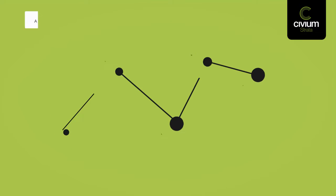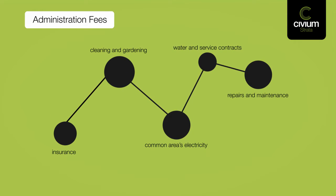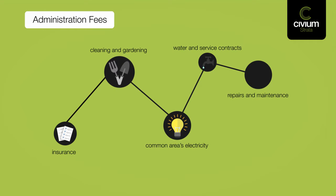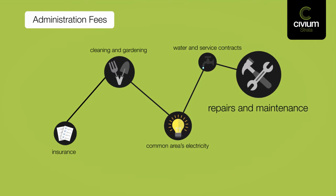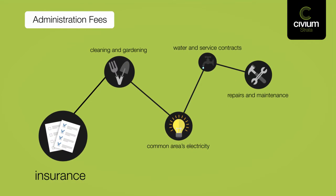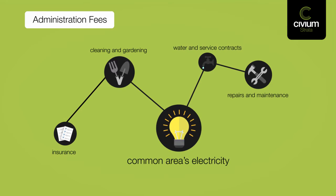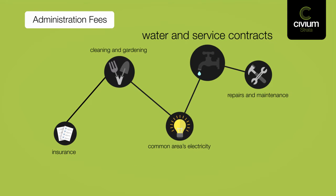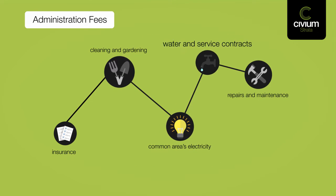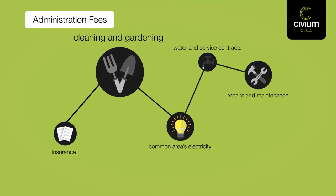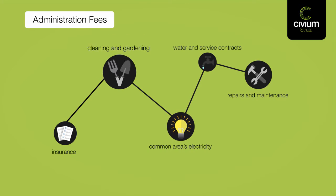The levies you pay go towards both the administration fees and the sinking fund. Your administration fees include repairs and maintenance, insurance, the common areas electricity, water and service contracts, cleaning and gardening.